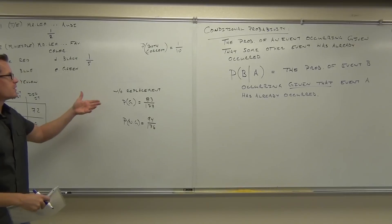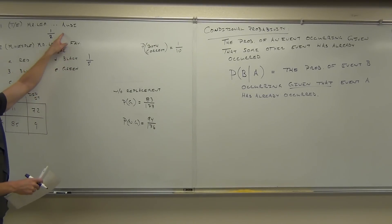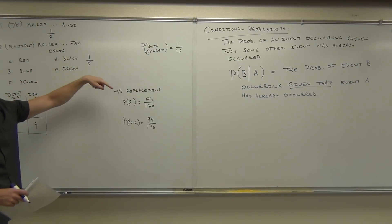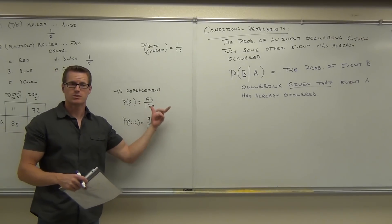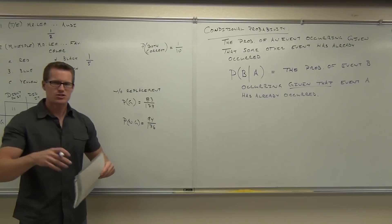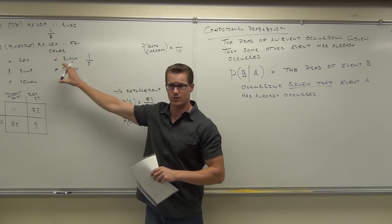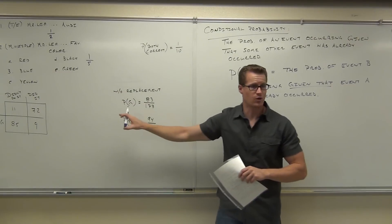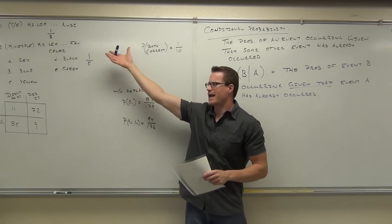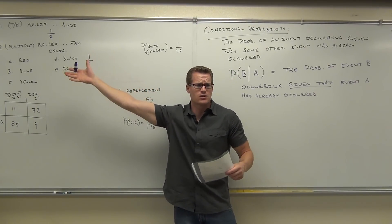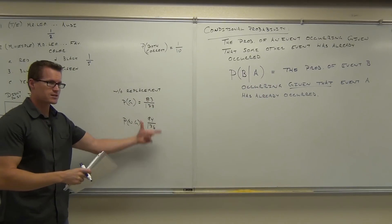Here's the probability of getting the color question correct given that you already got the Audi question correct — the Audi one doesn't affect the color one. But for the guilty/not-guilty selection, the probability is dependent on what happened first. Do you see the difference? Sometimes one event does not affect the other — those are independent. Other times, like without replacement, one event certainly does affect the other probability — those are dependent.